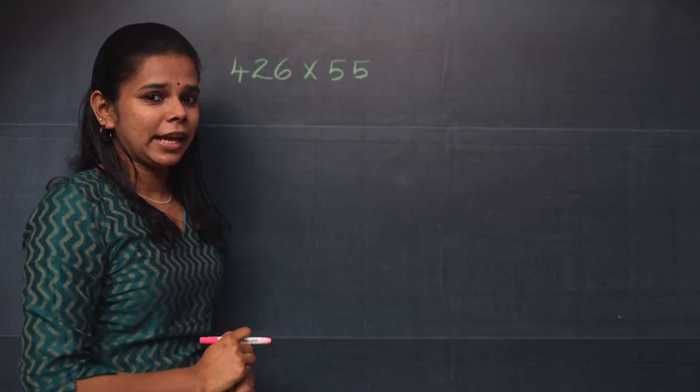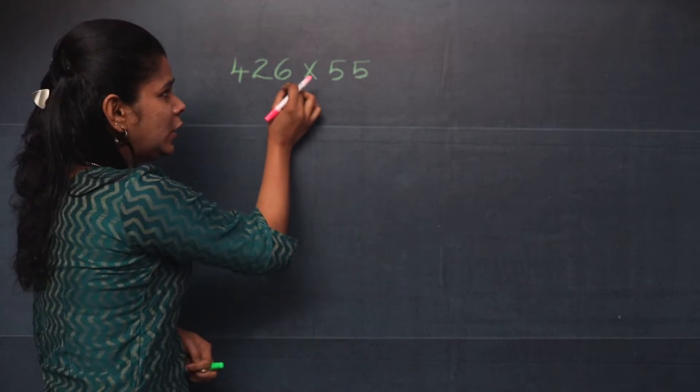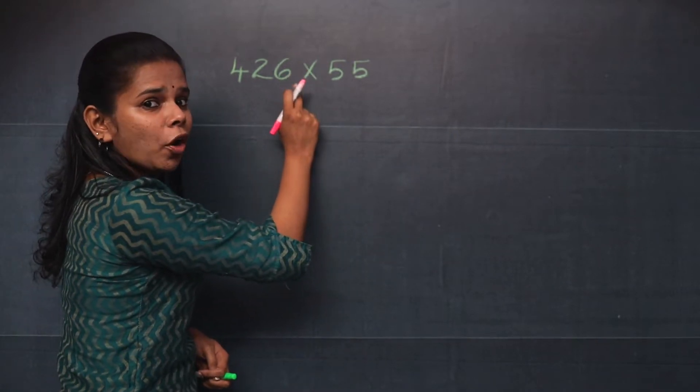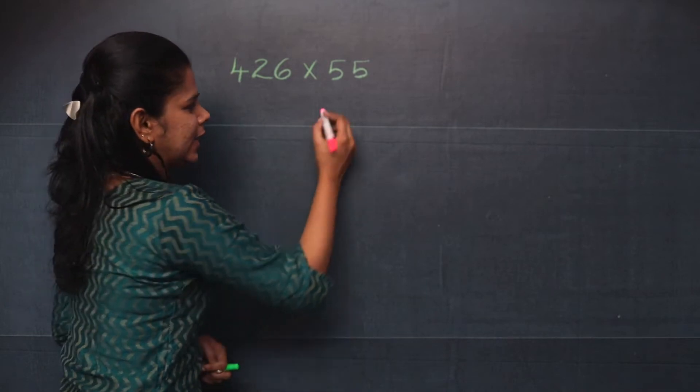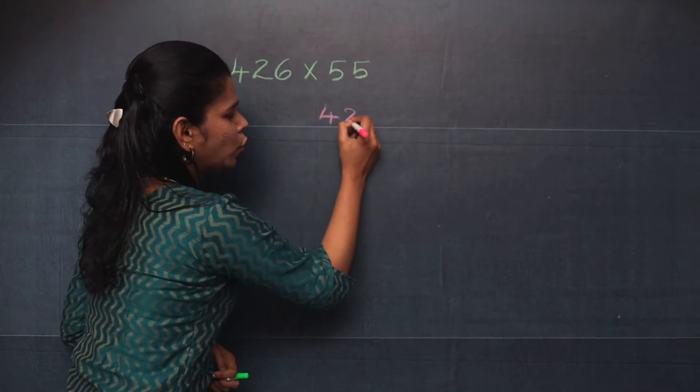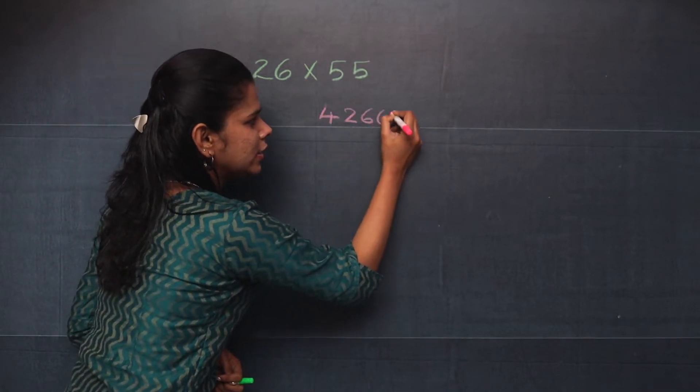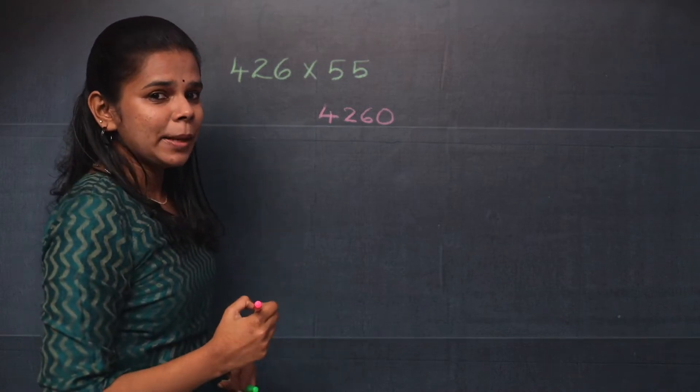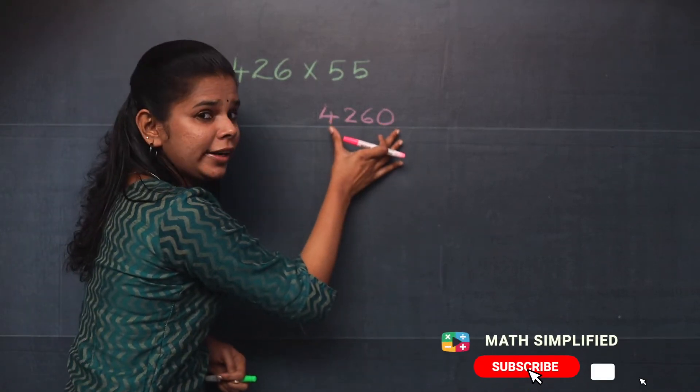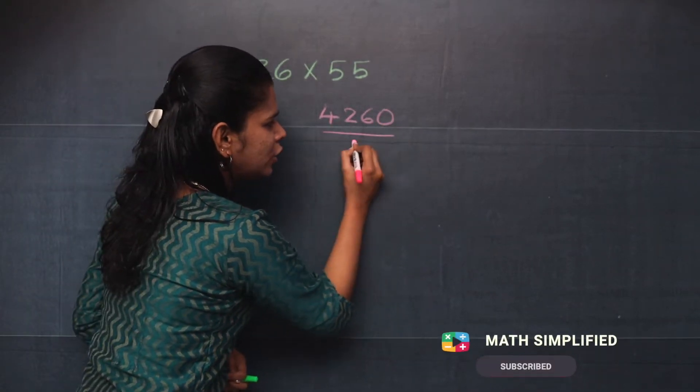The first step is you should put 0 towards the end of 426. That is 426 and then a 0. The next step is you will divide this number by 2.